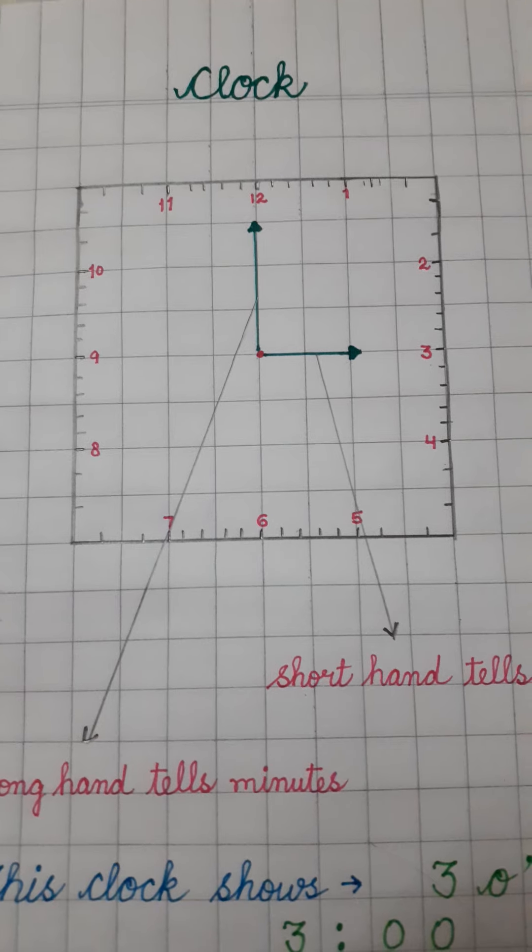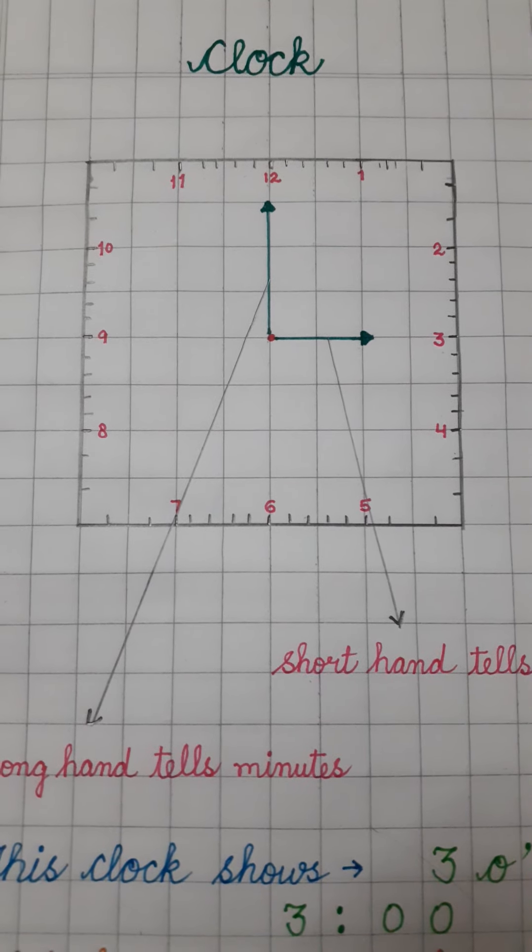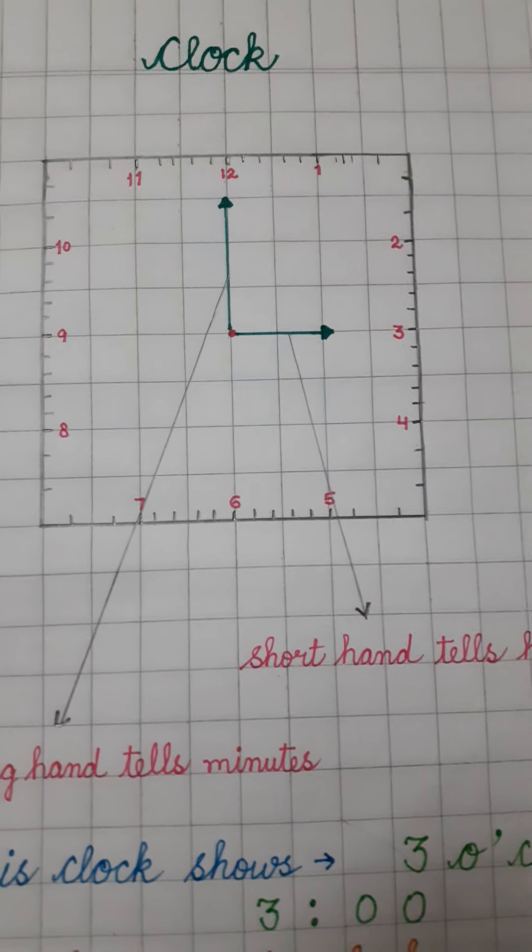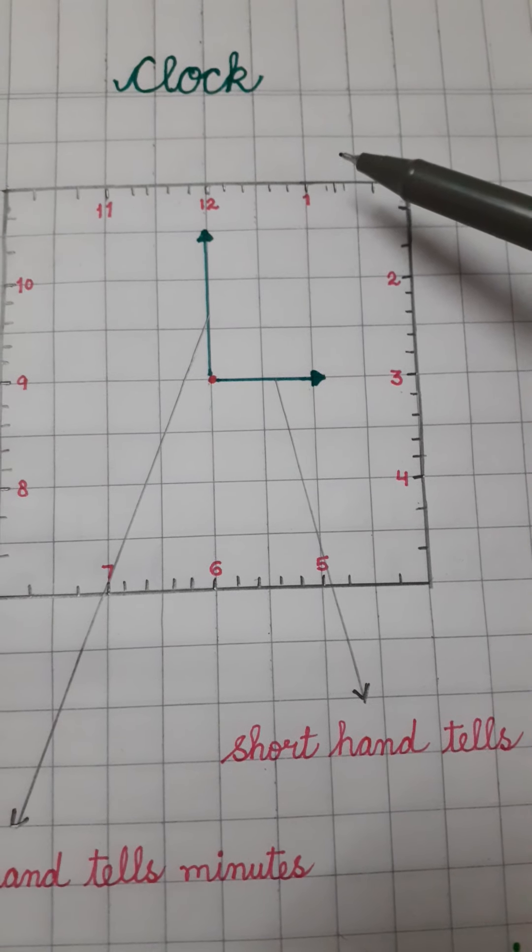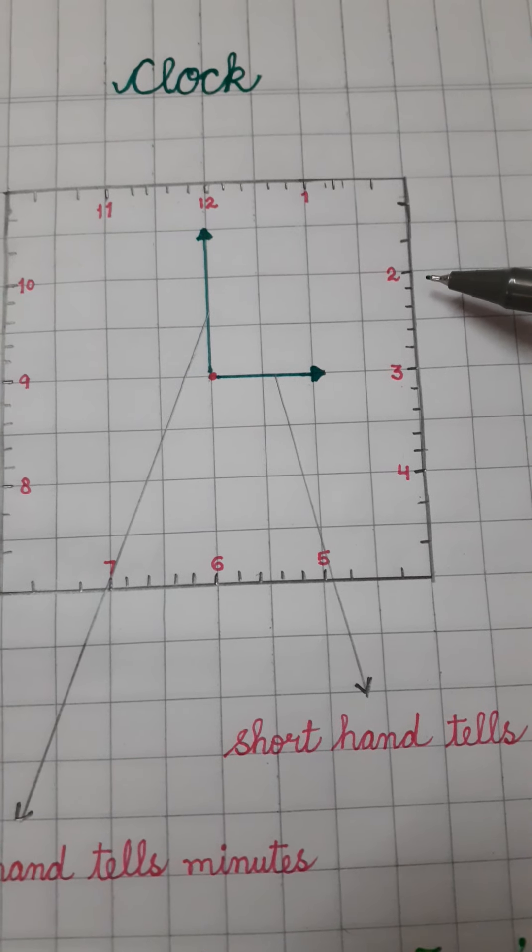And it is very simple as we have to count the table of 5. Aapko kisi teacher ne bataya ki joh humara time hota hai, clock hota hai, woh 5 ke table se chalata hai. Yes. चलिए, आज एक बार दुबारा देखते हैं. जब 1 पे होता है, तो हम 5, 1s are 5 बोलते हैं. 2 पे आता है, तो 5, 2s are 10 minutes होते हैं.